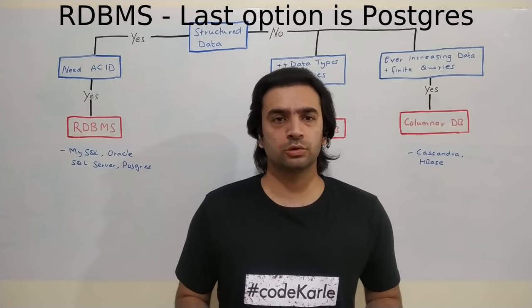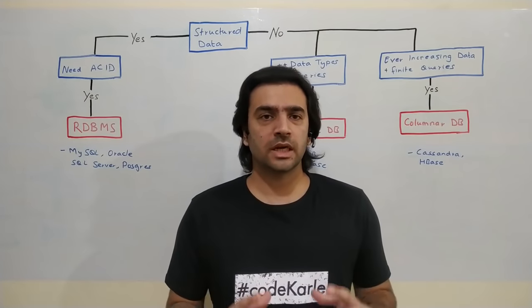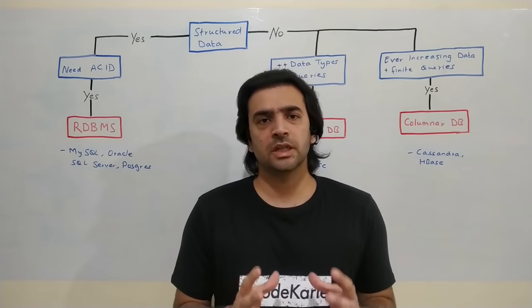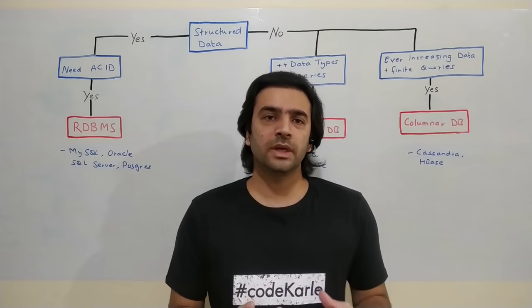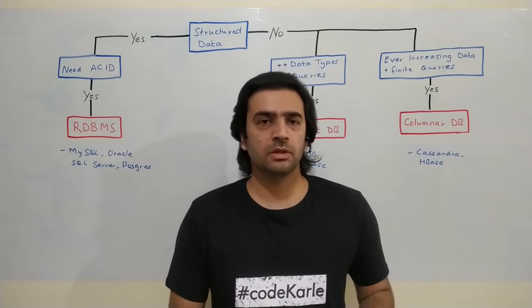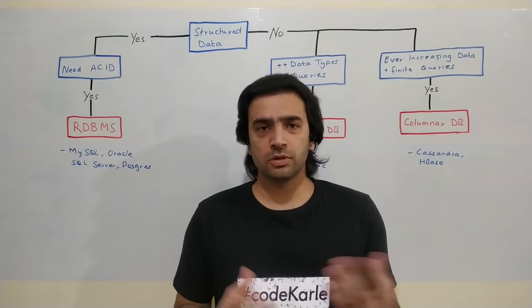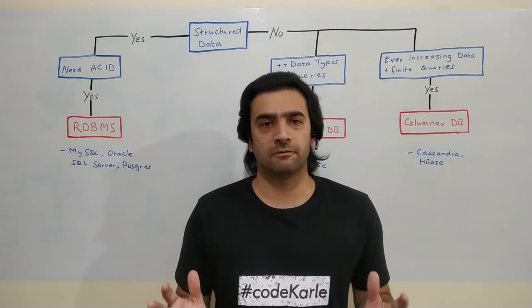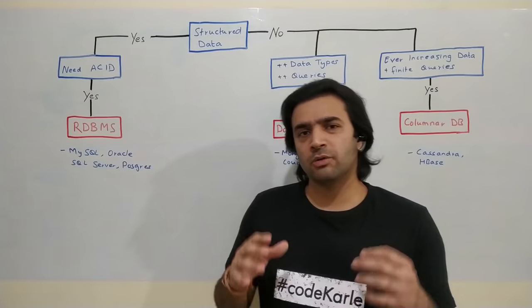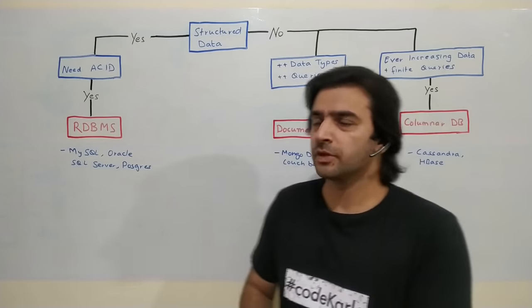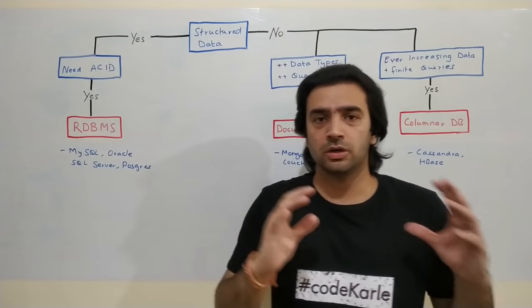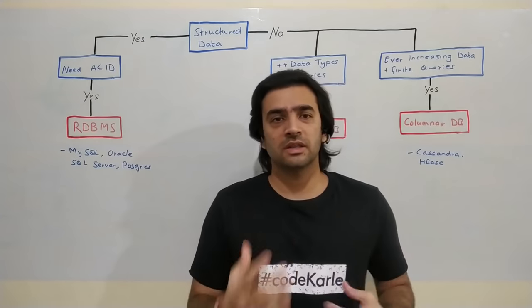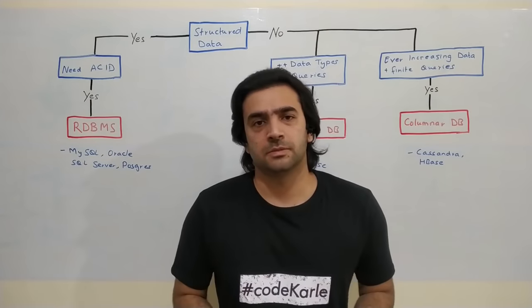Now let's look at the tricky SQL vs NoSQL decision. The first factor is data structure. If you have structured data that can be modeled as tables with rows and columns — like a user profile with name, email, city, phone number — a relational database makes sense. The next question is: do you need atomicity or transactional guarantees?